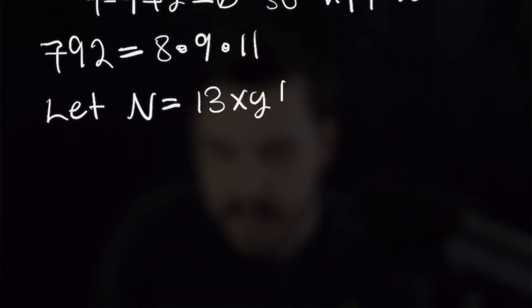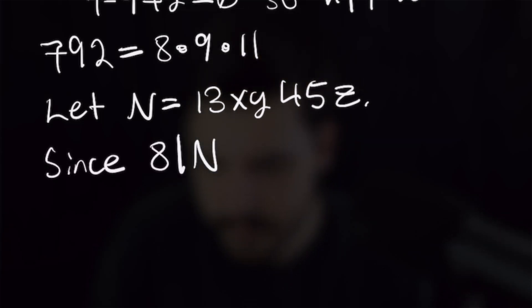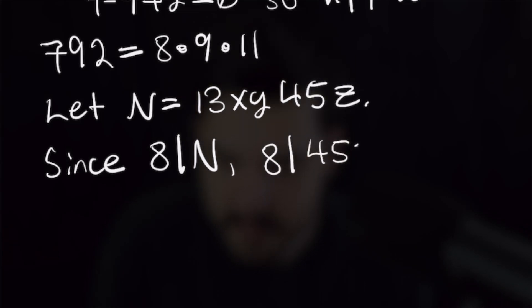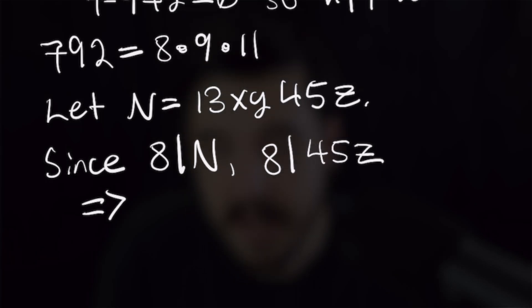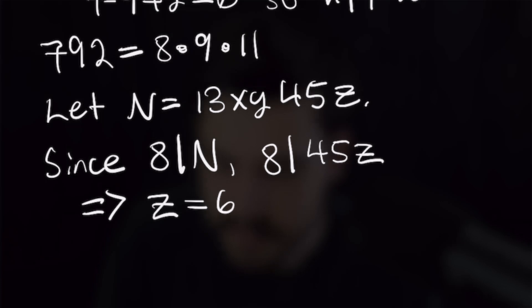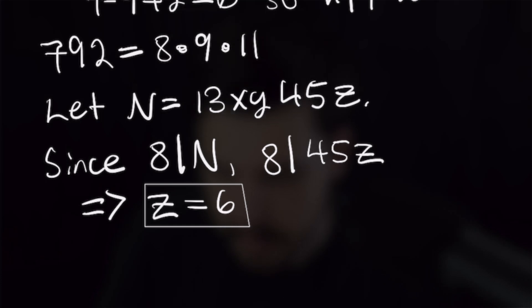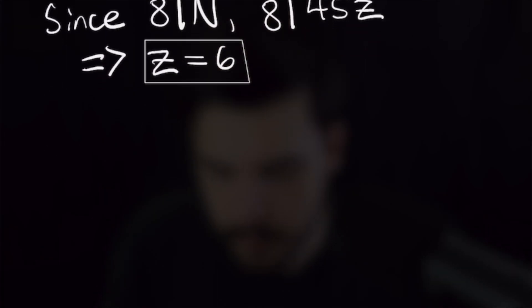Now we apply divisibility rules to limit the possibilities for x, y, and z. Let n = 13xy45z. Since 8 divides n, 8 must divide the last three digits. With z in the ones place, we need z = 6 as that is the only digit making 8 divide the last three digits (456). This eliminates one unknown.